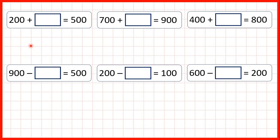Now, we have some missing number addition and subtraction problems for multiples of 100, that is, numbers that end in two zeros.